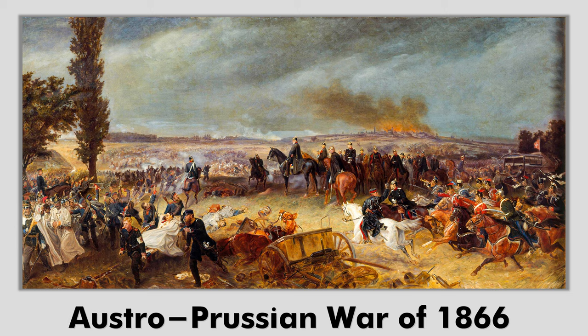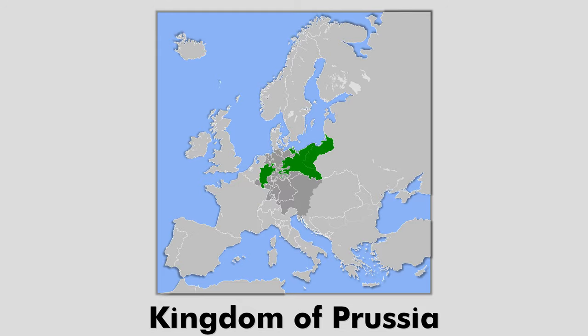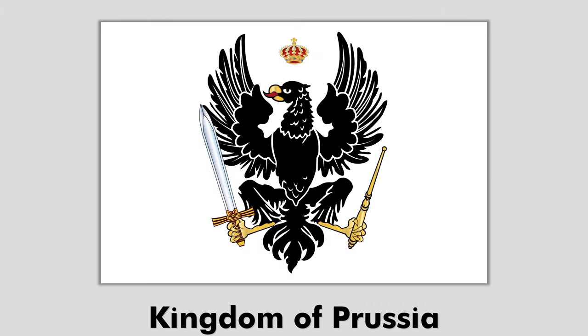The German Confederation ended as a result of the Austro-Prussian War of 1866, between the Austrian Empire and its allies on one side, and the Kingdom of Prussia and its allies on the other. The Kingdom of Prussia was a historically prominent German state, centered on the southeast coast of the Baltic Sea. The main coat of arms of Prussia, as well as the flag of Prussia, depicted a black eagle on a white background.